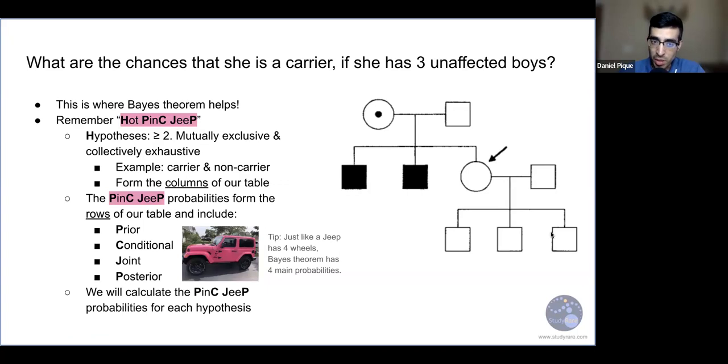Okay, then we move into the pink jeep probabilities. These are four different probabilities that we need for every Bayesian calculation. And these are going to form the rows of our table. So the P stands for the prior probability. The C stands for conditional probability. The J stands for joint probability. And the P stands for the posterior probability. And so one way I remember this is just thinking about a jeep, like the vehicle. You can see that it has four wheels. And that reminds me that Bayes' theorem also has four probabilities that we need to determine for each hypothesis that we're testing.